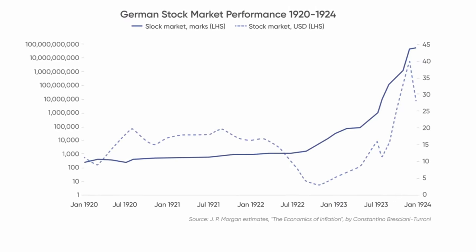And that's exactly what you see with the dotted blue line, which is the German stock market as measured in US dollars — which at the time were gold. Yes, the stock market goes up into the right, even measured in sound money, until the very end, when it starts to fall back down and valuations in real terms — prices in real money — start to come back down to earth.